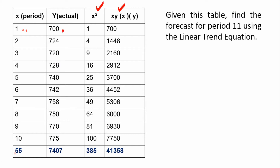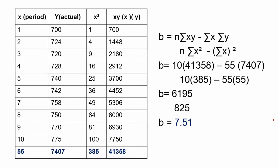Then we get the summation for each column. The summations will be used for the formulas. Now we solve for b: n times summation xy. n is the number of data, so we count the data under the period column. In our problem, it is 10 for 10 weeks. Minus summation x times summation y. Now divide this by n times summation x squared, minus summation x, then we square it.